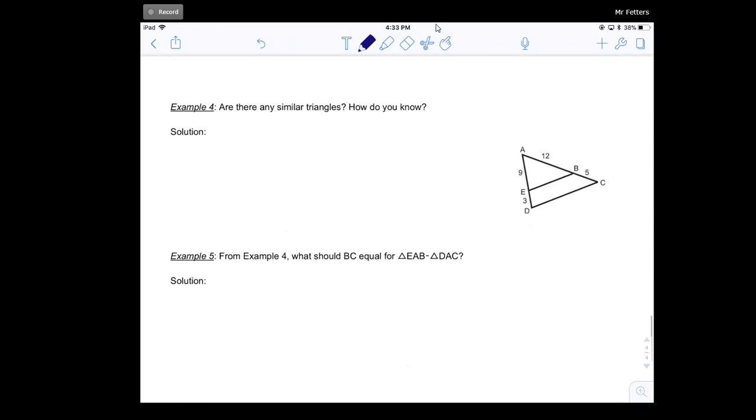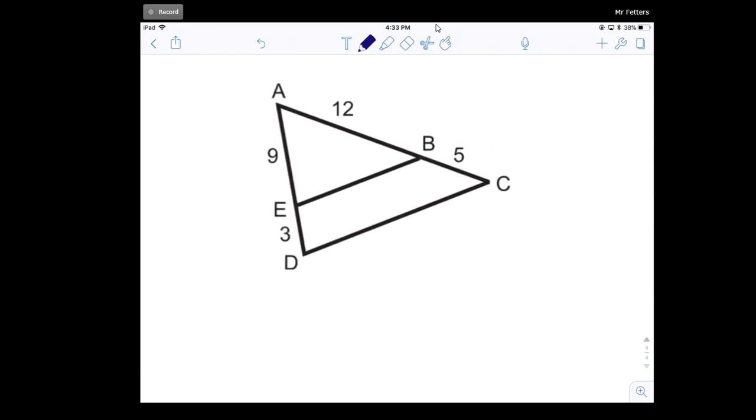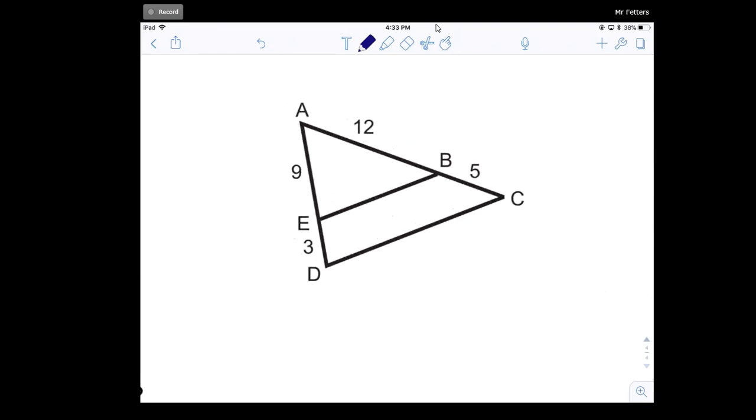Let's take a look at example four. It says, are there any similar triangles and how do you know? So if I look here, I have two triangles.